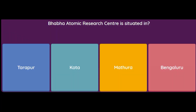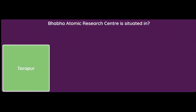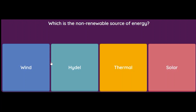Bhabha Atomic Research Centre is situated in Darapur, Kota, Mathura, or Bengaluru? We know Darapur was the first place where atomic research was situated. Which of these is a non-renewable source of energy — wind, hydel, solar, or thermal? Wind, hydel water, and solar are all renewable, but thermal is non-renewable. So the answer is thermal.